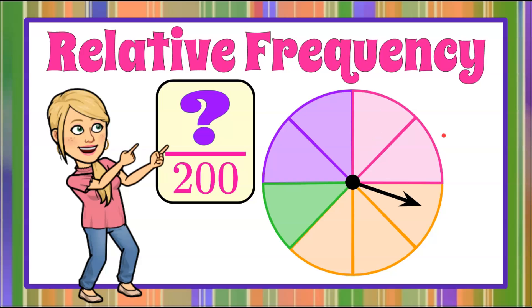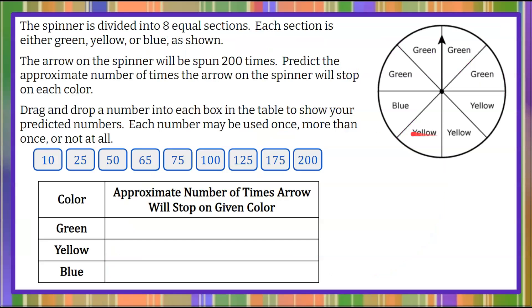It's the Magic of Math, and today we're talking relative frequency using probable outcomes. Here we have a spinner that is divided into eight equal sections. Each section is either green, yellow, or blue as shown. Here's your spinner.